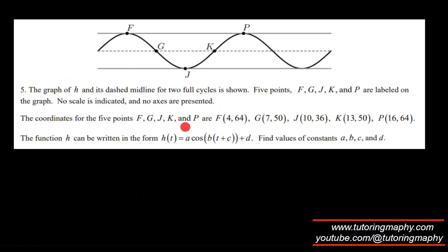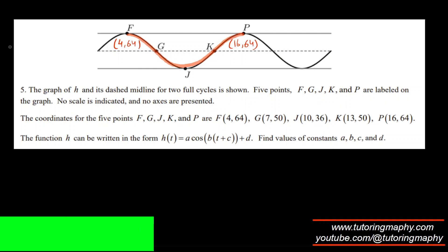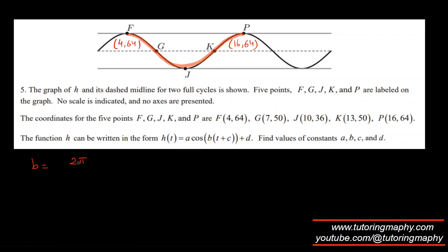We're given coordinates of 5 points and need to write H in the form A cos(B(t + C)) + D, finding all constants. Looking at the graph, points F and P mark one full cycle. Going from t = 4 to t = 16 is 12 units, so B = 2π / 12 = π/6.